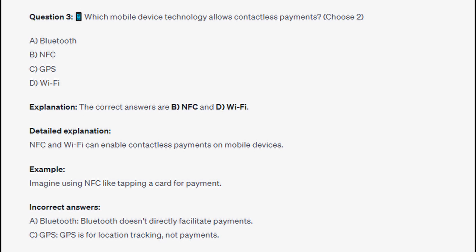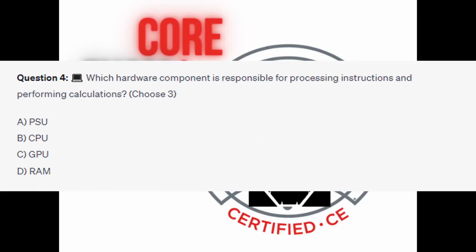Bluetooth doesn't directly facilitate payments, and GPS is for location tracking, not for payments. And for the next question of our exam, question number 4. Which hardware component is responsible for processing instructions and performing calculations? Choose three.